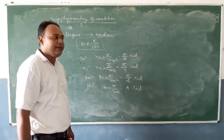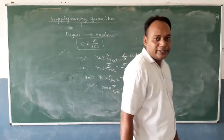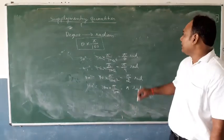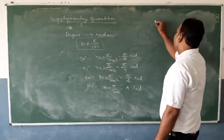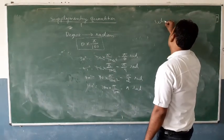Sometimes you need to convert an angle from radians back to degrees. We are now going to look at how to convert angles from radians to degrees.